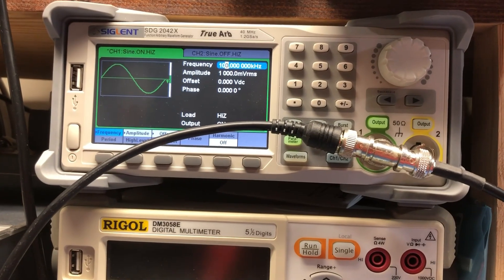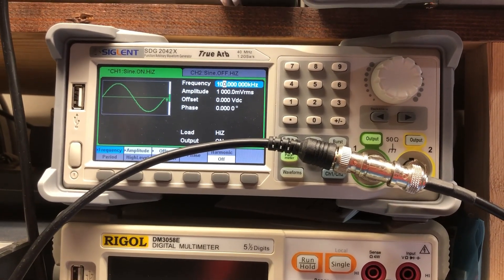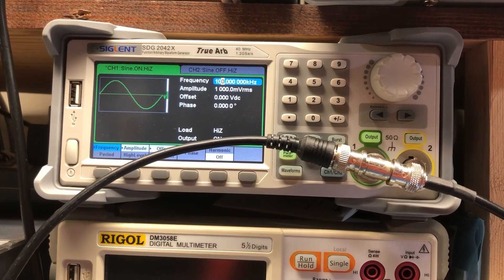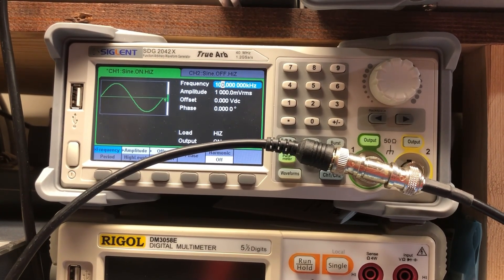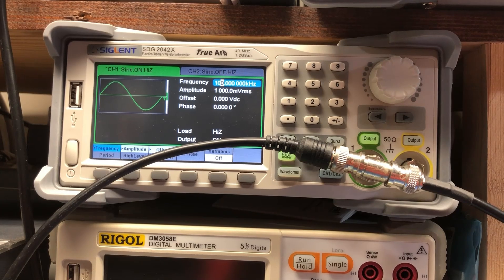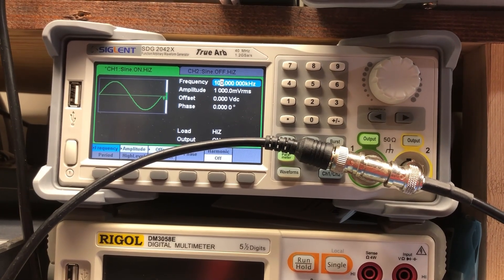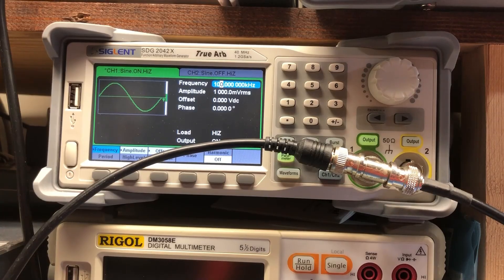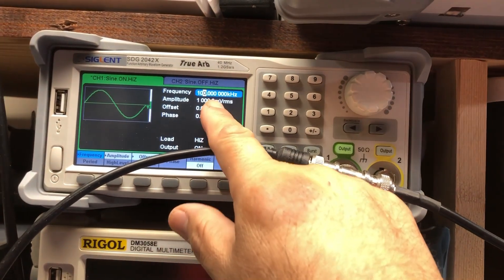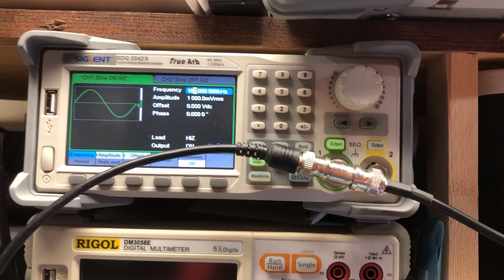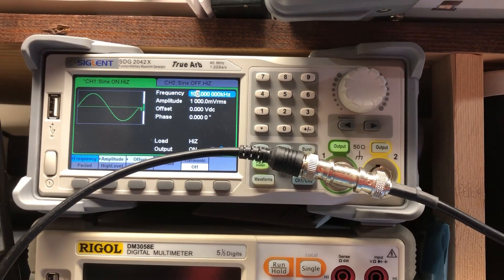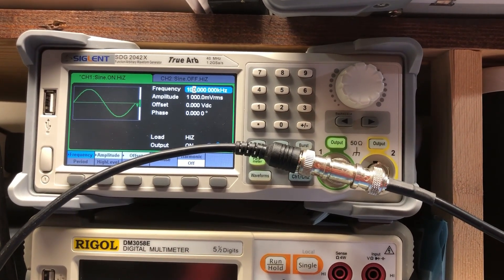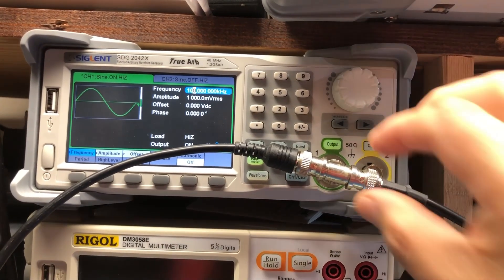What you need is a function generator that can output a sine wave. In this case, since a little flyback transformer that I have operated at 100 kilohertz, what you want to do is set the frequency to 100 kilohertz like you've done right here. Then what you can do is put an amplitude of one volt RMS.